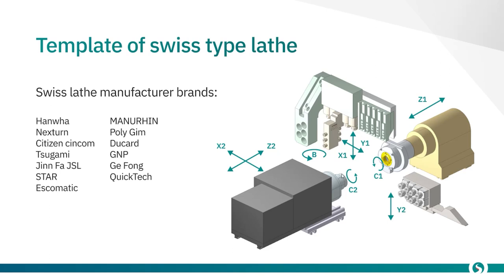The first control channel controls the X1, Y1, C1, and Z1 axes, and the second channel controls X2, Y2, C2, and Z2 axes. Two channels means there are two NC programs synchronized with each other. The first one controls the machining on the main spindle; the second one is in charge of the machining on the counter spindle. Machines of this type also have a bar feeder and a part receiver, so all these components need to be controlled.